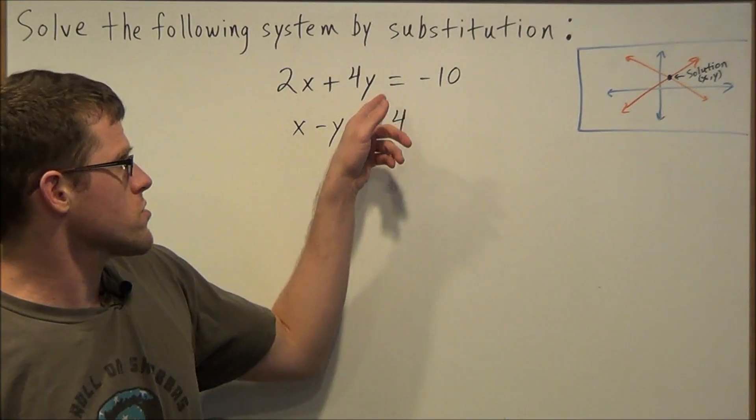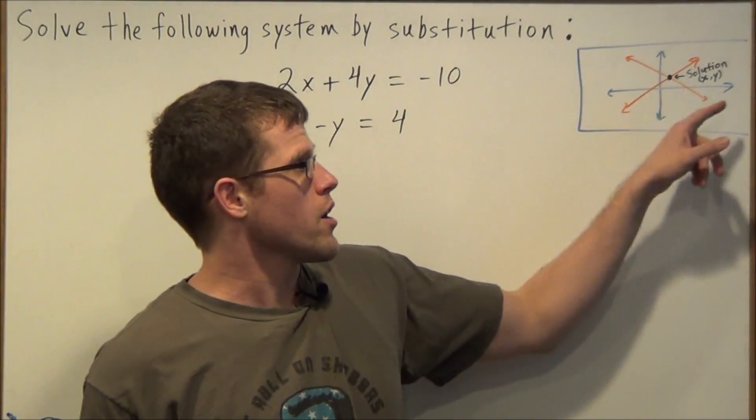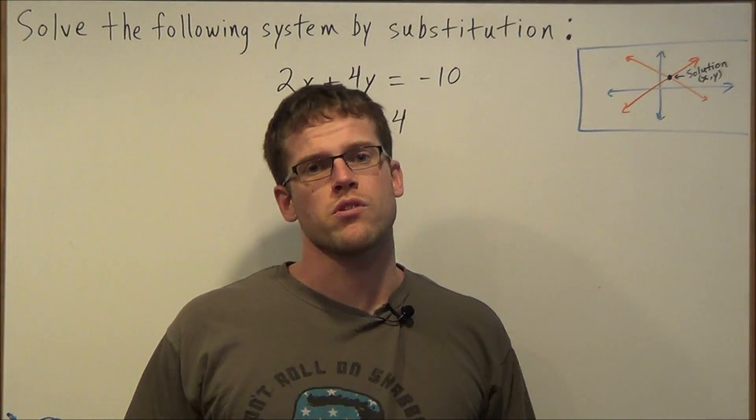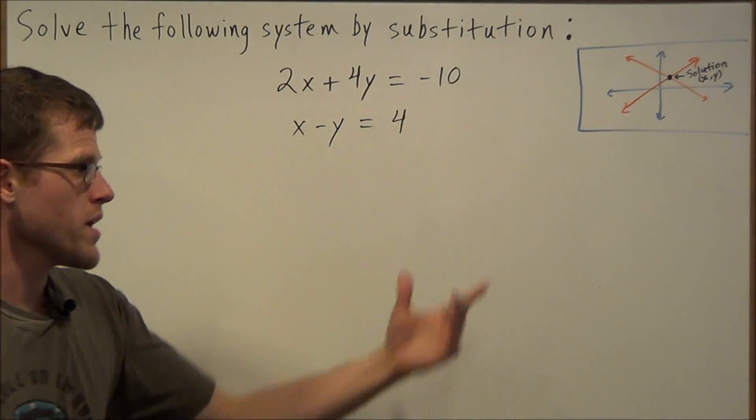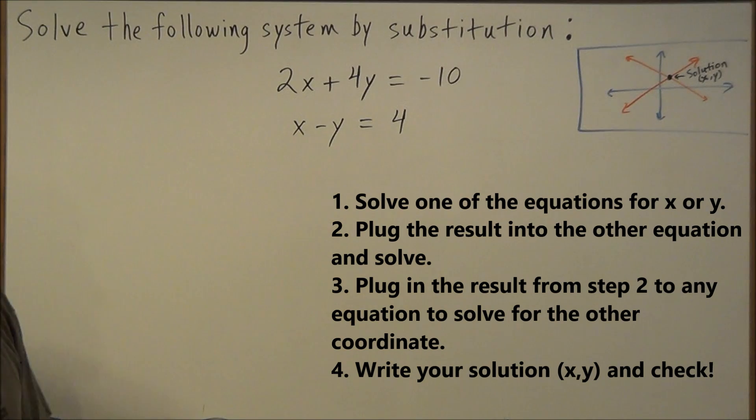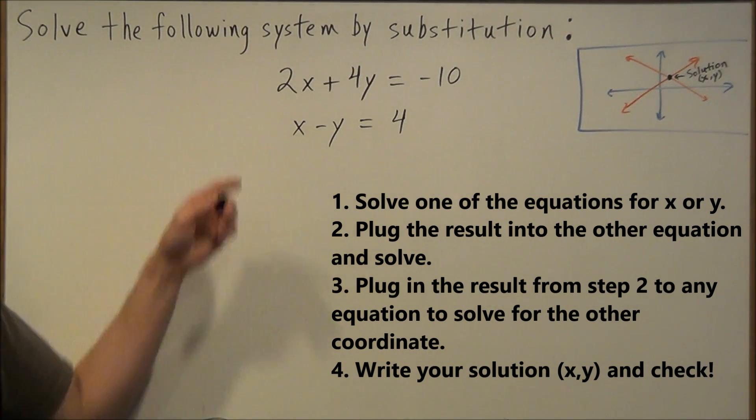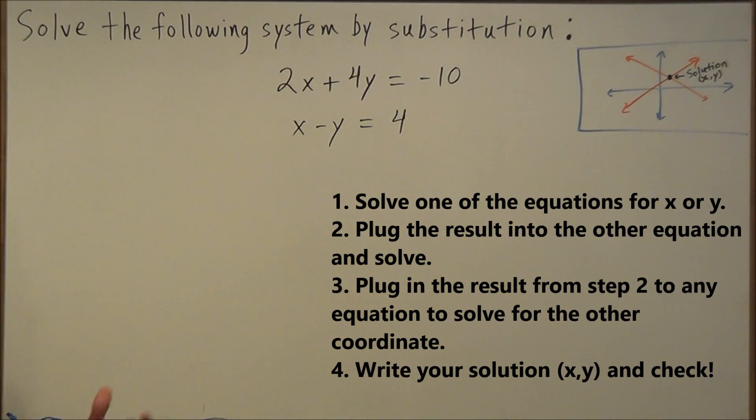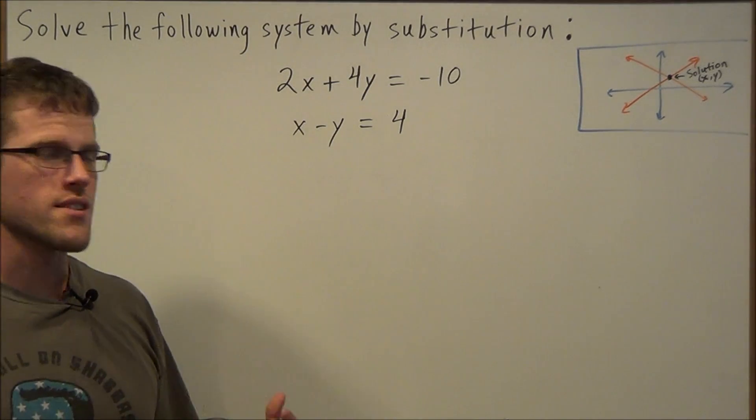Now the concept here, these are two linear equations, and we're trying to find the point of intersection, but we're going to do this algebraically. So if we have a look at these few steps here, we could break this problem down into stages. So the first thing we want to do is solve one of these equations for x or y. Now the key at this step is to pick the one that's easier to solve for.